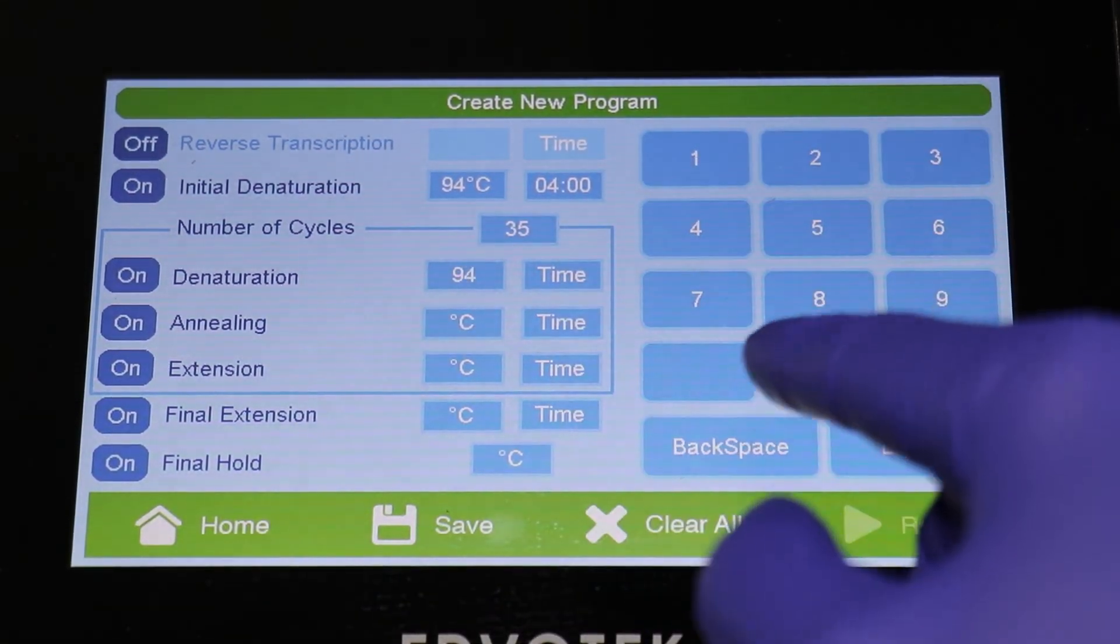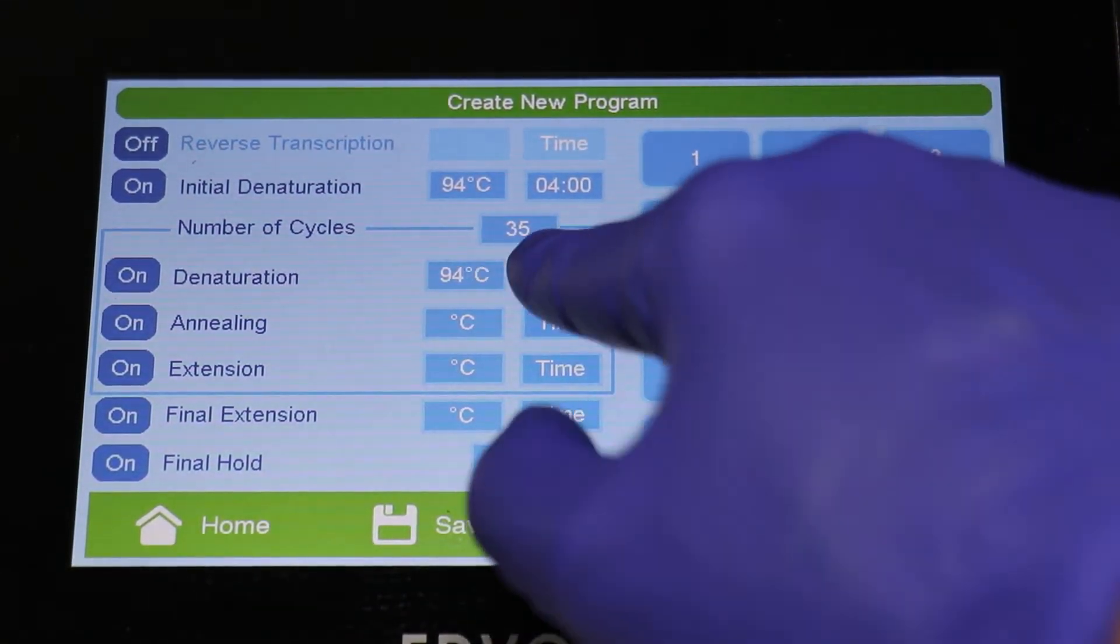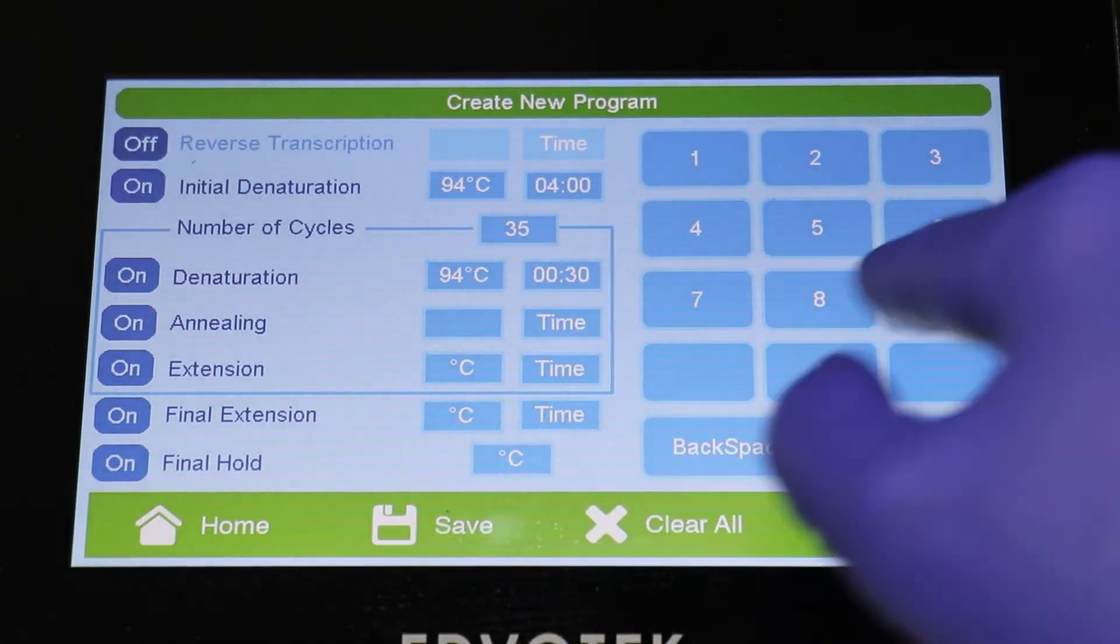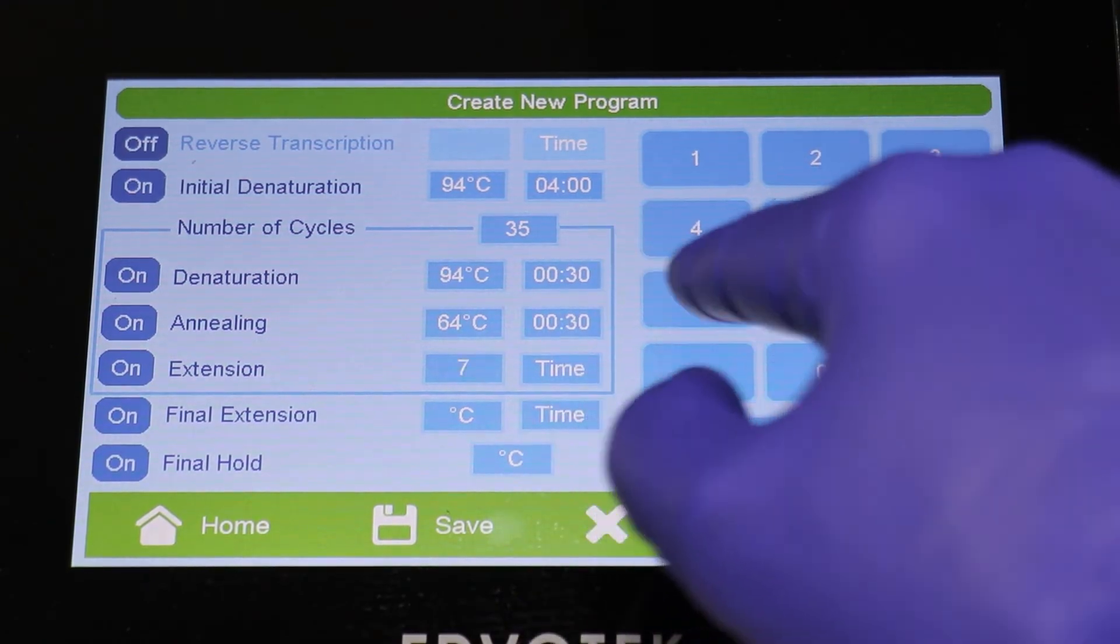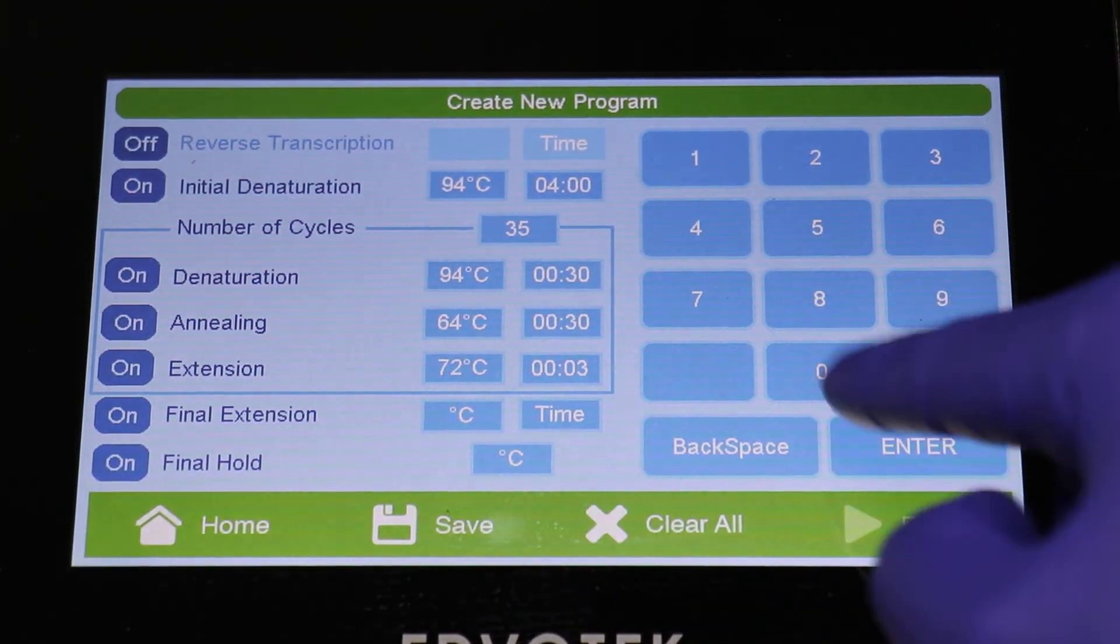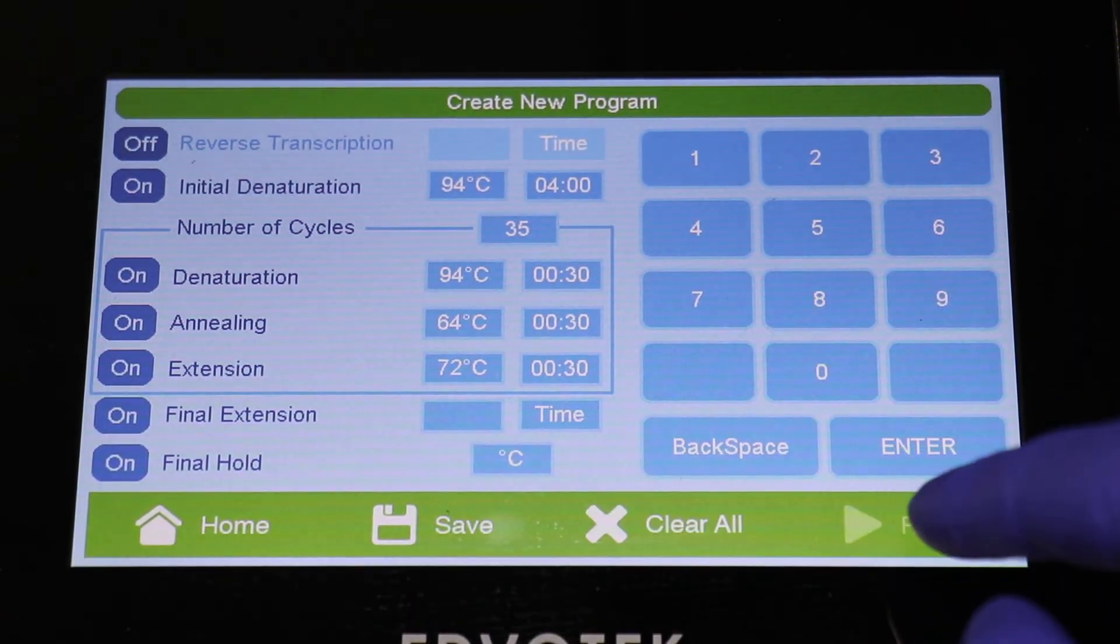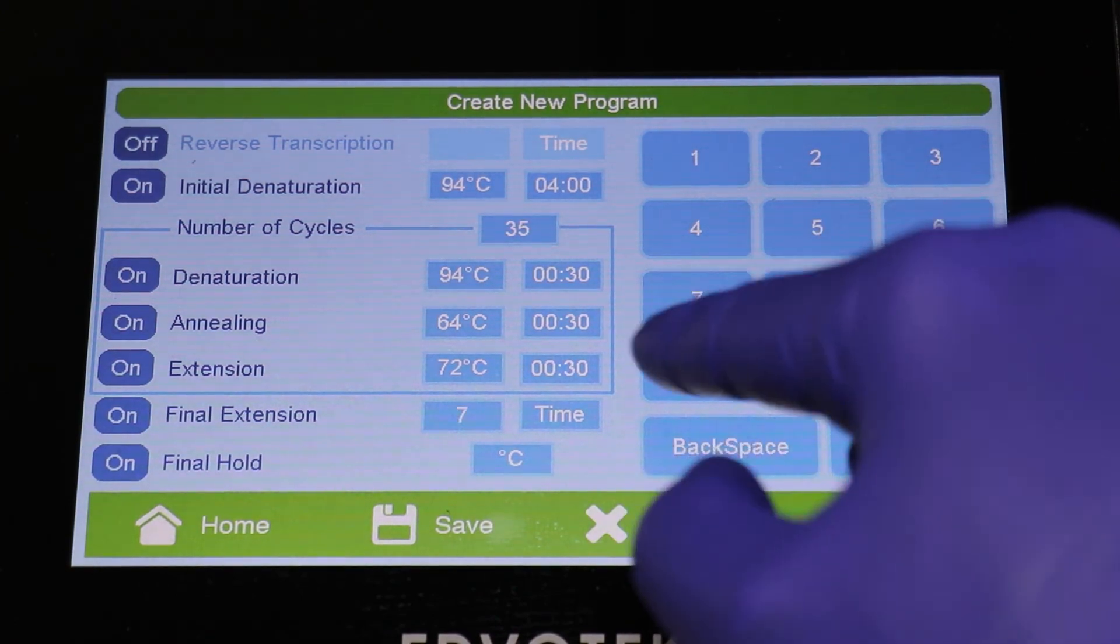Preparing the thermocycler: the thermocycler should be programmed as follows: initial denaturation 94 degrees Celsius for 4 minutes, 35 cycles in total as follows: 94 degrees Celsius for 30 seconds, 65 degrees Celsius for 30 seconds, 72 degrees Celsius for 30 seconds, and finally a final extension of 72 degrees Celsius for 5 minutes.